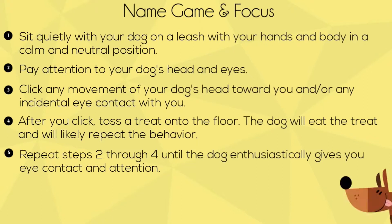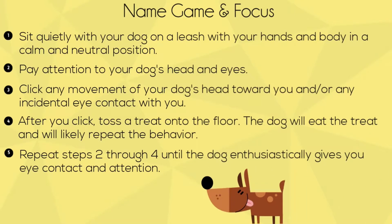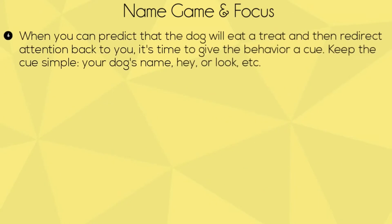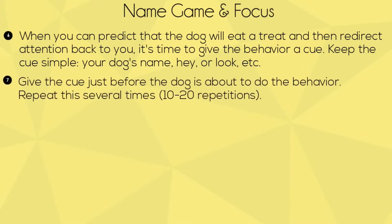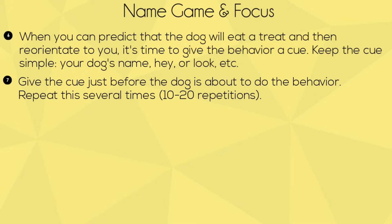Repeat until the dog is enthusiastically giving you eye contact and attention. When you can predict that the dog will eat his treat and then redirect attention back to you, it's time to give the behavior a cue. Keep the cue simple — such as the dog's name, 'hey,' or 'look.' Give the cue just before the dog is about to do the behavior. Repeat this several times; it will probably take 10 to 20 repetitions.